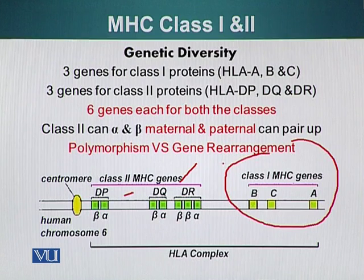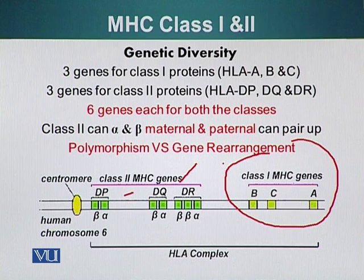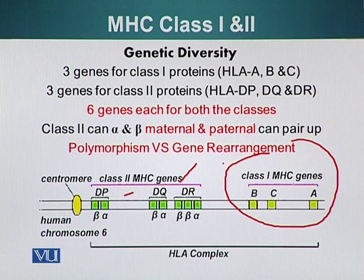These genes are not present as gene segments the way antibody or TCR genes are. Instead, diversity comes because these genes are very polymorphic. It is very rare for two unrelated individuals to have an identical set of MHC proteins.